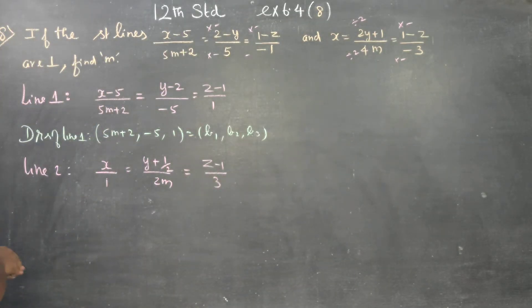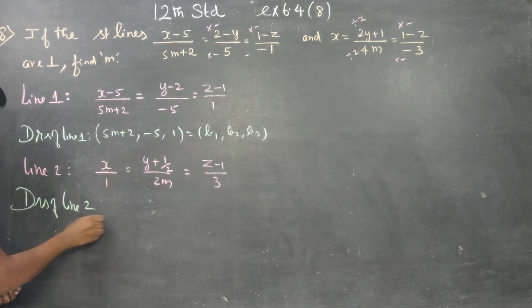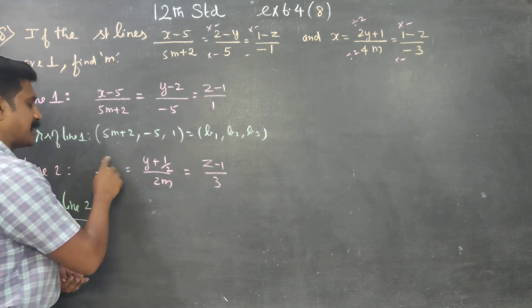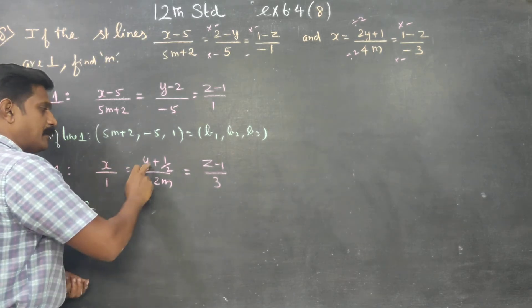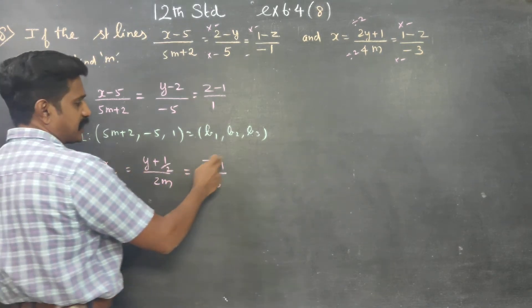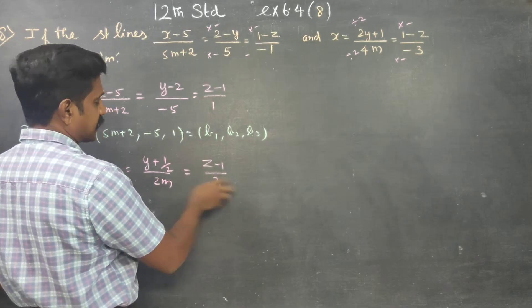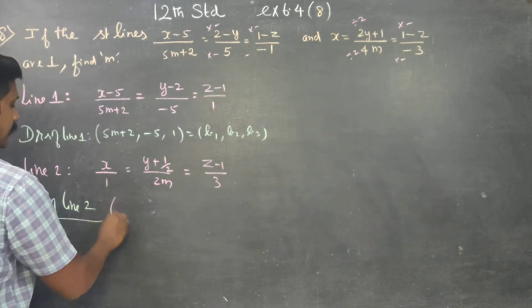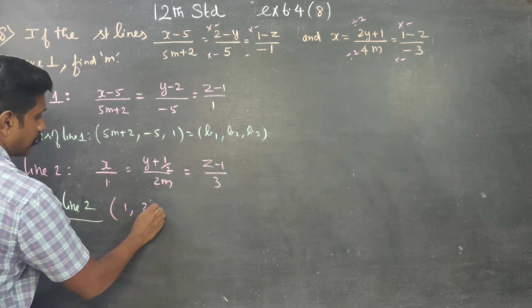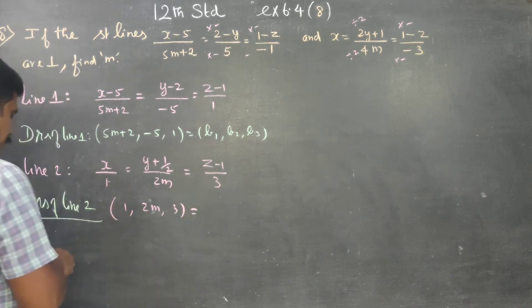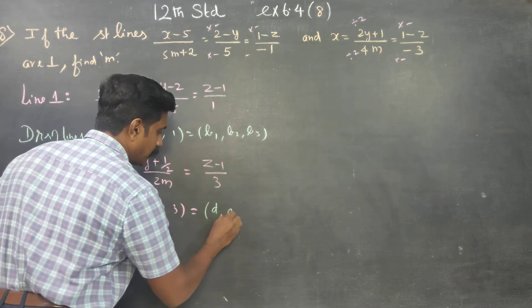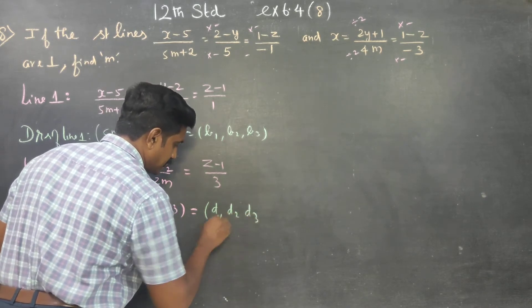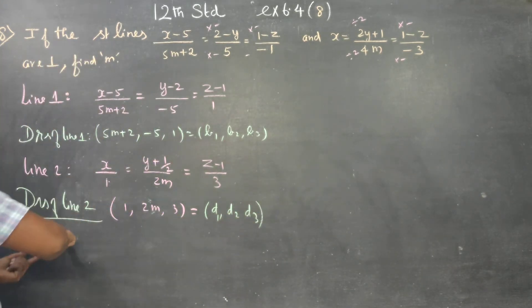This is line 2. I am going to find the direction ratios of line 2. Using x minus x1 by b1, y minus y1 by b2, z minus z1 by b3, the direction ratios of line 2 are d1, d2, d3.